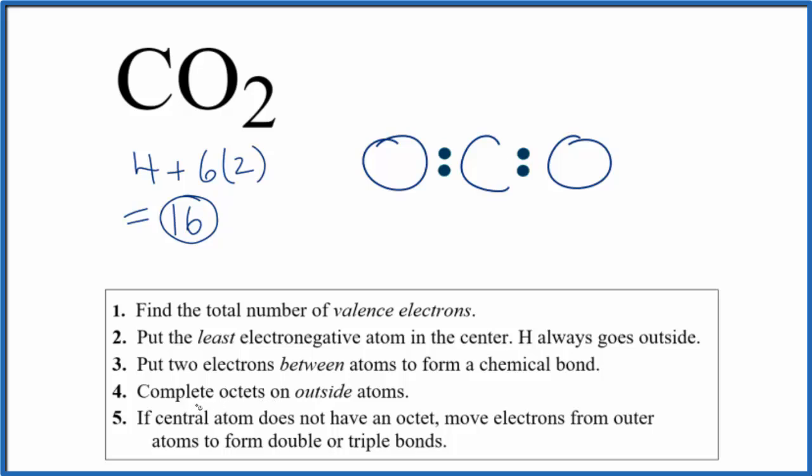Next, we're going to complete the outside atoms, the octets. Complete the octets on the oxygen. So two, four, six. We've used 10. We have eight more. And then the last two here. So at this point, we've used all 16 valence electrons.